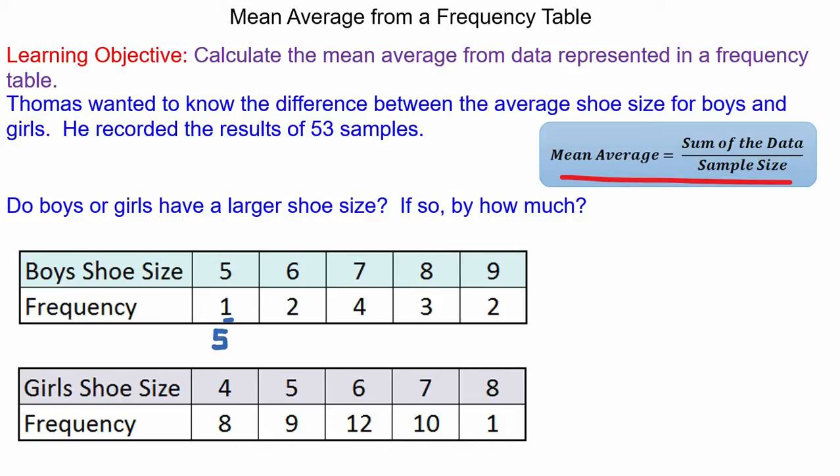Two boys have a shoe size of six so the total shoe size you would say is twelve. Not ideal because we know shoe size isn't linear but I am sure you get the example.